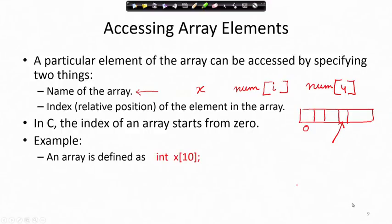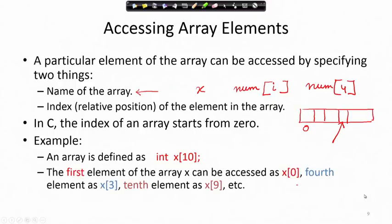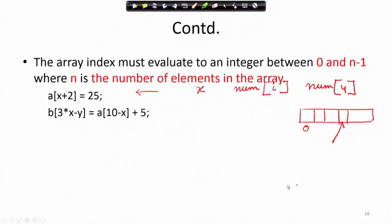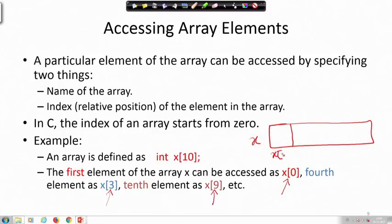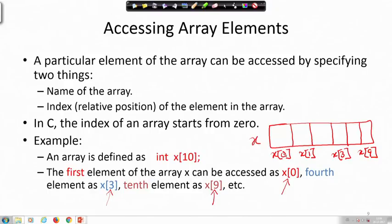When we have an array defined as int x[10], the indices are from x[0] to x[9]. The first element can be accessed as x[0], the fourth element as x[3], and the tenth element as x[9]. That is how the array elements are addressed and referred to by their indices.